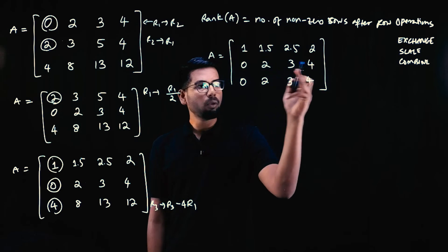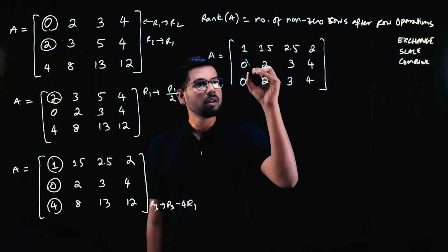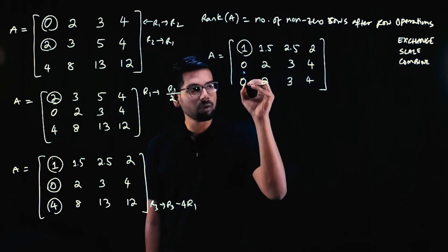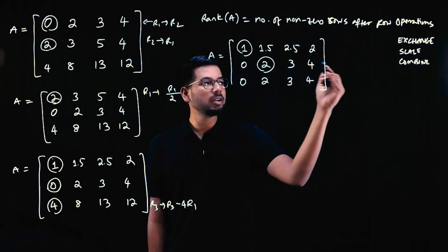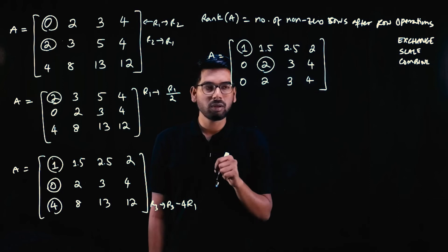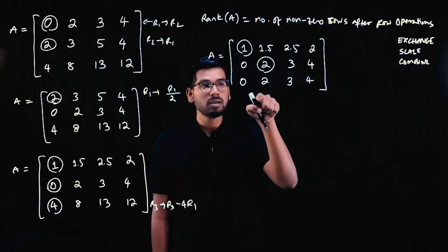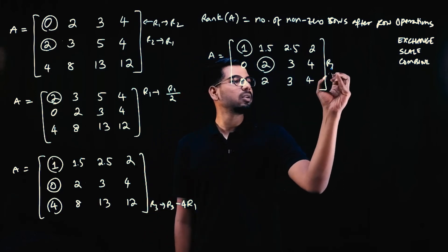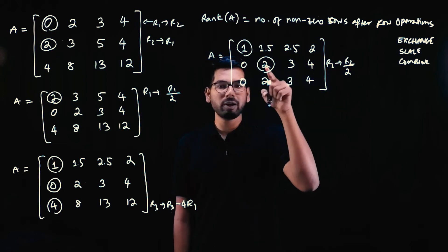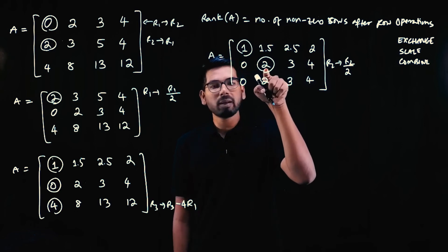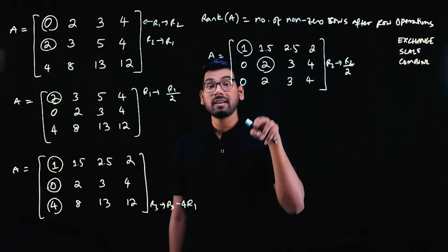Now we see the second and third rows are the same, so we can simply subtract one from the other. But first, following the procedure, we need to make the second element of the second row equal to 1. We divide the second row by 2: 0/2 = 0, 2/2 = 1, 3/2 = 1.5, 4/2 = 2.